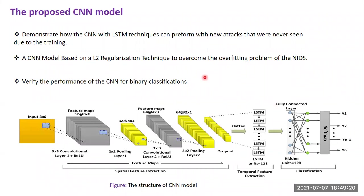The model I used combines CNN with LSTM, learning both spatial and temporal features of the input data. I used two convolutional layers, each followed by a max pooling layer. I applied L2 regularization, which is widely used compared to L1, along with the dropout method. The feature extractions from the CNN are then passed to an LSTM layer with 128 units, and the output of the LSTM passes through a fully connected layer, and finally a softmax layer for classification.